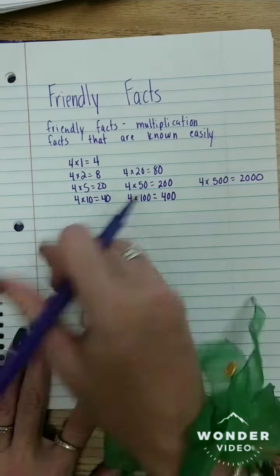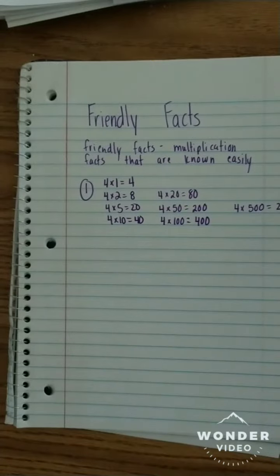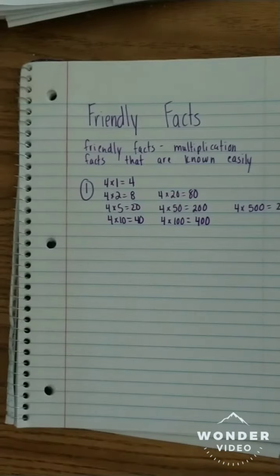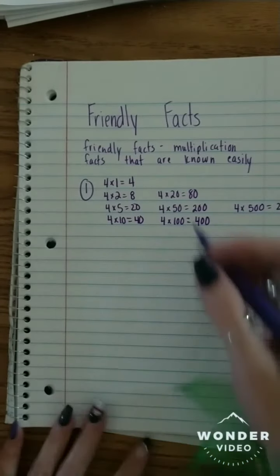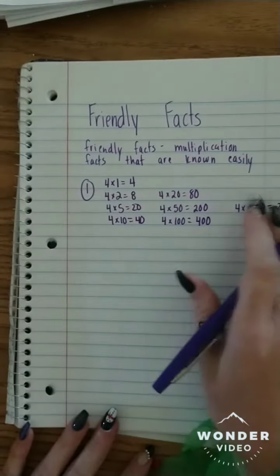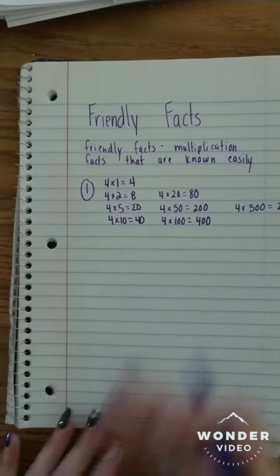So we have finished our friendly facts. We got our facts that we are familiar with, and most kids are familiar with their ones tables, tens tables, and their twos and fives. If they're not, if they don't have them memorized, they're super easy to figure out. And the multiples of that. So that's the step one with doing friendly facts.